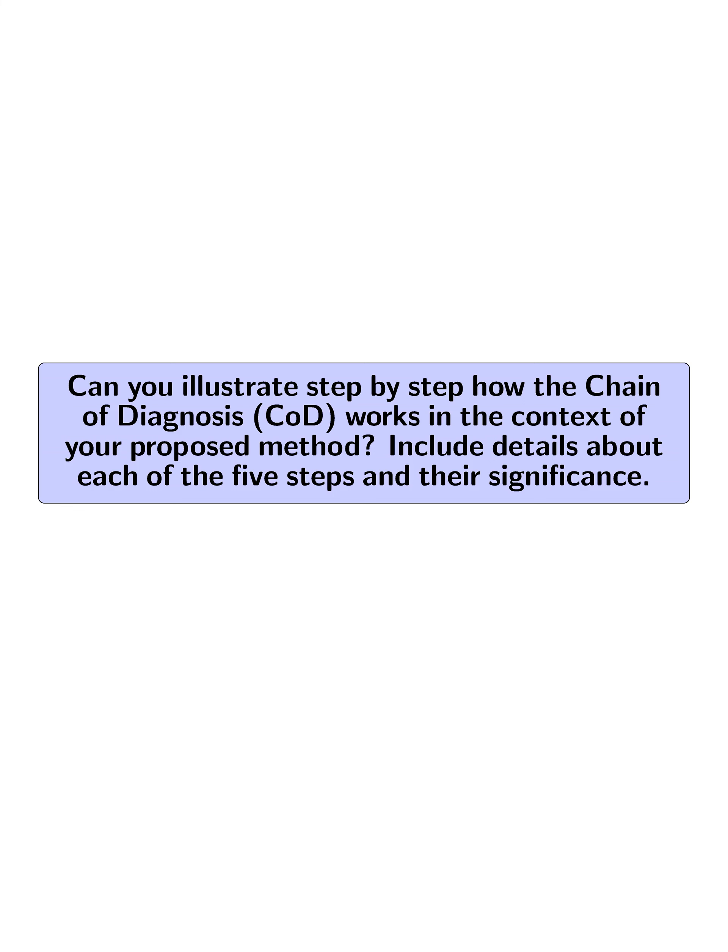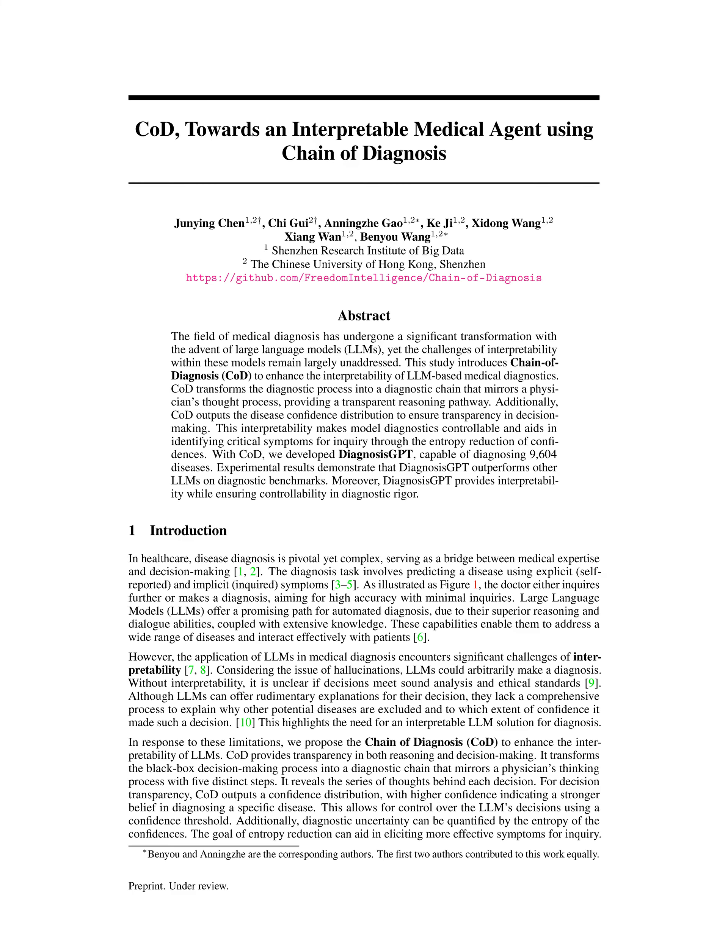Can you illustrate step-by-step how the Chain of Diagnosis (COD) works in the context of your proposed method? Include details about each of the five steps and their significance. The Chain of Diagnosis (COD) operates through five distinct steps, each crucial for enhancing the interpretability and accuracy of disease diagnosis.